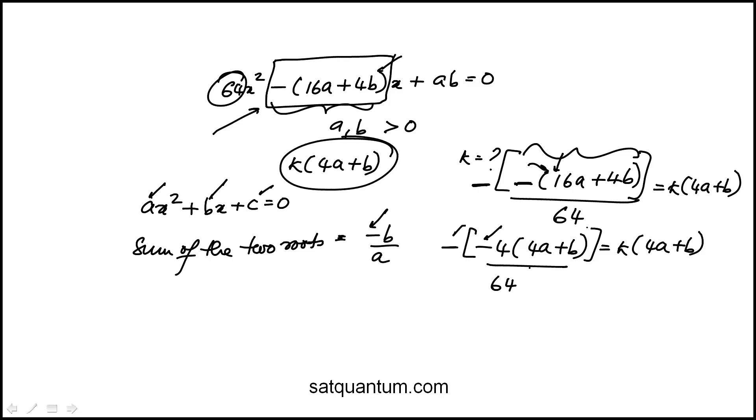And you'll notice that 4a plus b is on both sides. This becomes 4 over 64 is k, and that then reduces to 1 over 16. So k is 1 over 16. So this result is important.